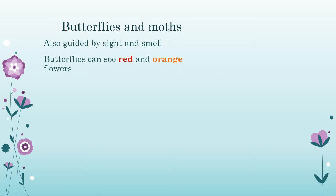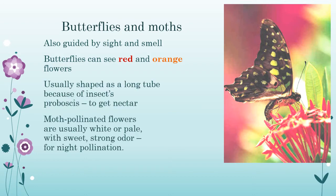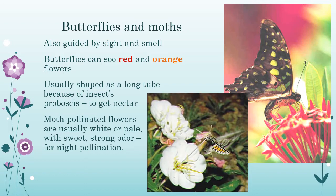Butterflies and moths are also guided by sight and smell. Butterflies see red and orange, so a lot of butterfly flowers are going to be red and orange, and they often have a long tube so butterflies can uncurl their proboscis — like a long drinking straw — and put it down to drink the nectar. Moth-pollinated flowers, because moths are out at night, are usually white or pale in color with a very strong sweet smell. Moths are usually out at night, and when they land, their wings are flat, whereas butterflies land with wings folded up.